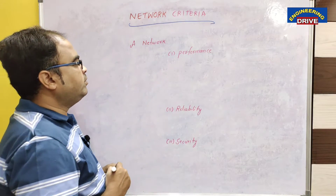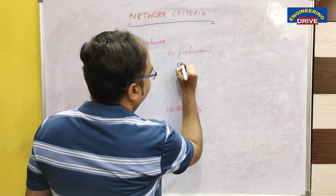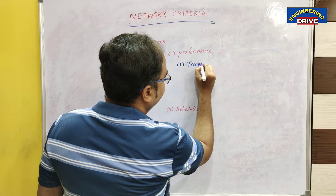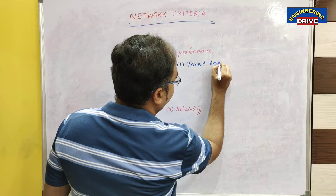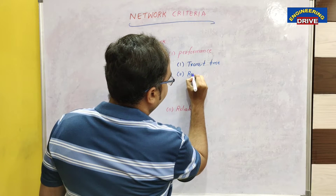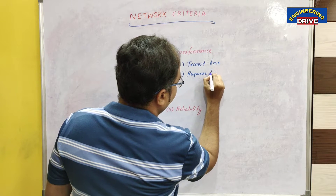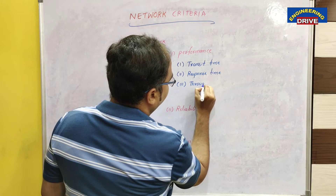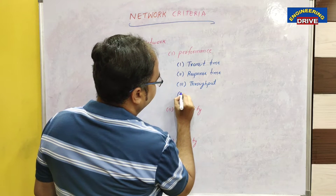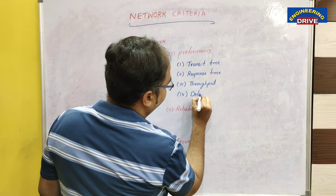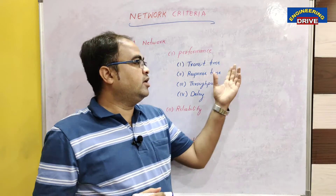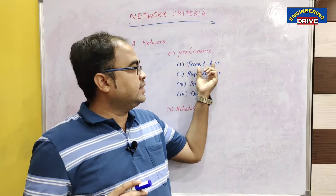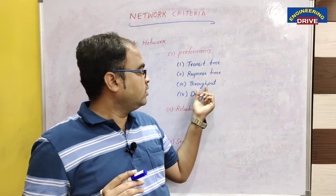Let me discuss one by one how our network depends upon these three criterias. First one is performance, second one is reliability, third one is security. How to judge the performance of a network? The performance of a network is generally determined by using four parameters: first one is transit time, second one is response time, third is throughput, and the fourth is delay.